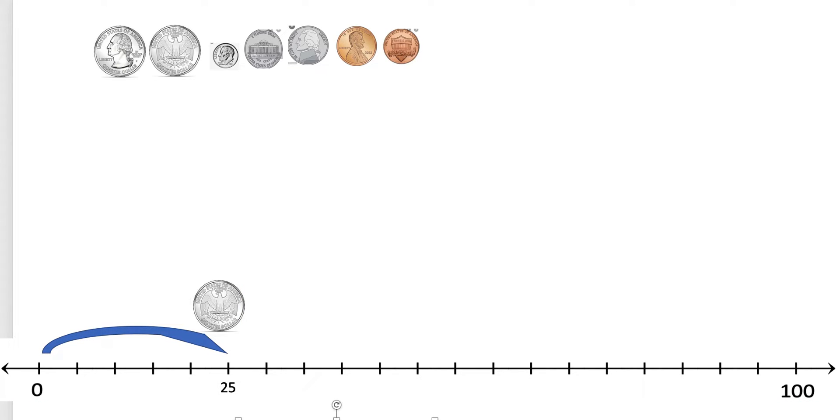The next thing I'm going to do is do my next quarter. I know that's also worth 25, so I'm going to hop 5, 10, 15, 20, 25. And I know that I have this quarter done, so I'm going to drag that quarter down and I'm going to write 50 underneath.